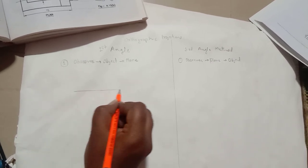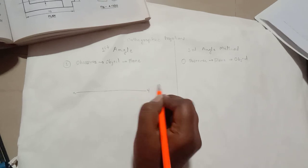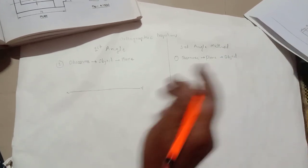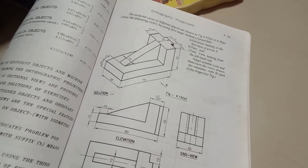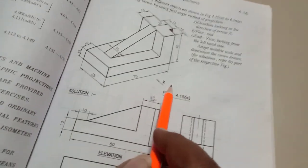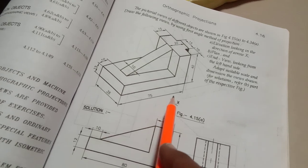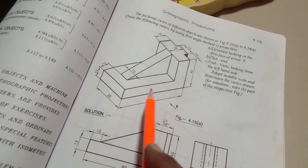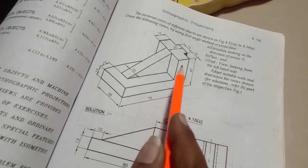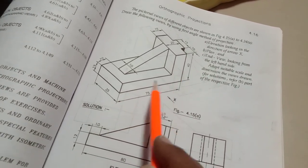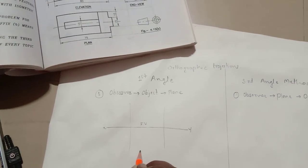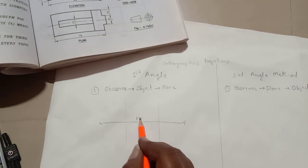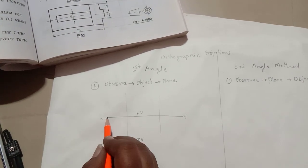The second difference is about plotting of the views. Consider this XY line as our reference line. If we consider any object and want to draw its front view by looking in the X-direction, in case of the first angle method of projection, the front view always comes above the XY line and the top view always comes below the XY line, below the front view. Always remember this.